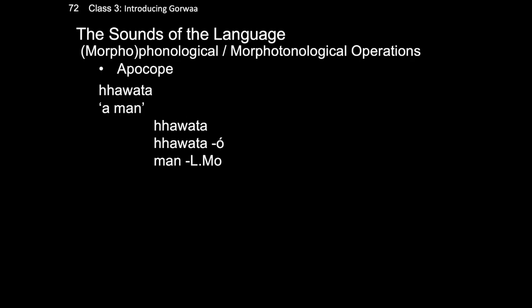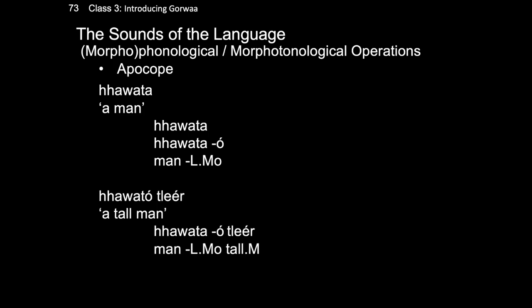The same thing happens in nouns, with the relevant morpheme being the linker. The linker for hawata, meaning man, is a high-toned O, but when we say the word man — hawata — we do not pronounce the O. If, however, we add an adjective to the end of the phrase, the O no longer undergoes apokopi and is pronounced: hawata.